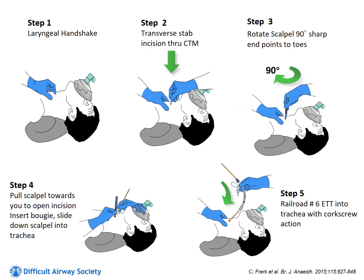Step one is the laryngeal handshake: find the larynx, shake it side to side, bring your finger down, find the cricothyroid membrane. Step two is a direct stab — a transverse incision across the front of the neck through the cricothyroid membrane. Rotate the scalpel 90 degrees with the sharp point towards the toes, then gently rock the scalpel back towards the chin to open up the incision. Slide the bougie down alongside the scalpel for stability, take out the blade, and railroad a size 6.0 endotracheal tube down into the trachea using a corkscrew motion if needed.